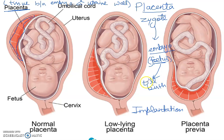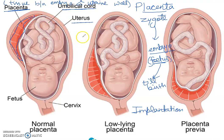After implantation, the chorionic villi of the blastocyst will grow into the endometrium. You can see here — this is the uterus and this is the umbilical cord which will connect. The endometrial tissue undergoes changes, and this is known as the maternal placenta.